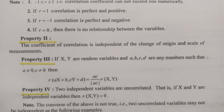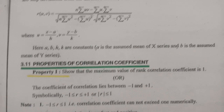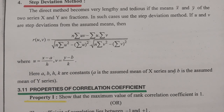These are all the methods for finding the correlation coefficient — one is the graphical method and the other is the mathematical part. Karl Pearson's method is the most important. In upcoming videos, many problems related to these topics will be solved, which will definitely be very helpful.